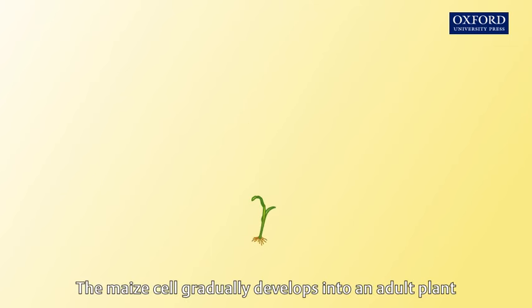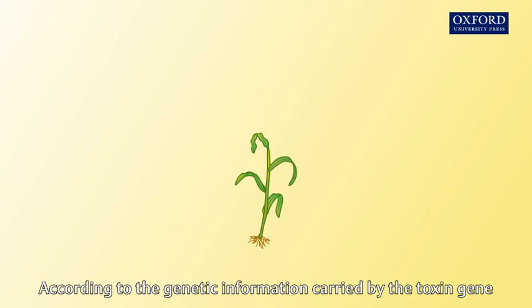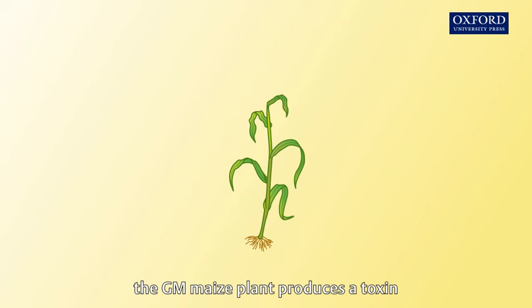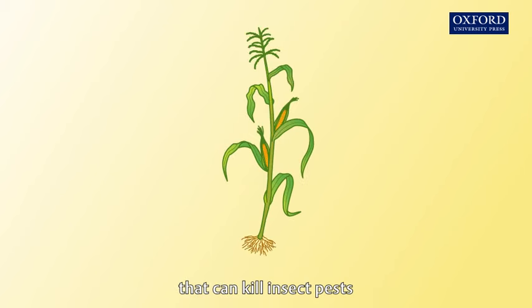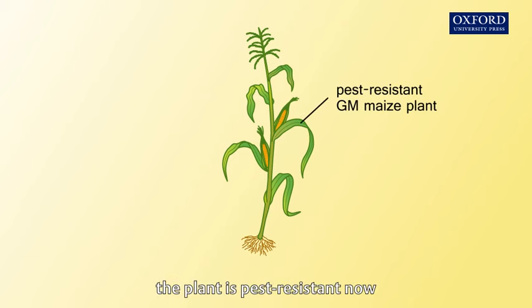The maize cell gradually develops into an adult plant. According to the genetic information carried by the toxin gene, the GM maize plant produces a toxin that can kill insect pests. In other words, the plant is pest resistant now.